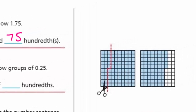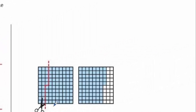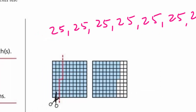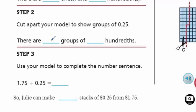Now cut apart your model to show groups of twenty-five hundredths. If we keep cutting those apart into twenty-five hundredths, we end up having twenty-five, another twenty-five, another twenty-five — so twenty-five, fifty, seventy-five, one, one twenty-five, one fifty, and I need one more — that gives us seven groups of twenty-five hundredths. Use your model to complete the number sentence: one and seventy-five hundredths divided by twenty-five hundredths equals seven. Julie can make seven stacks of twenty-five cents from one dollar and seventy-five cents.